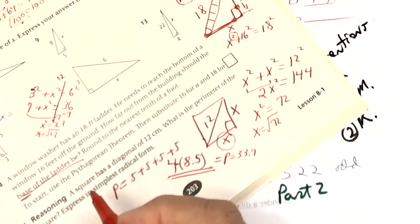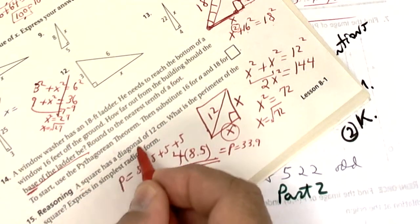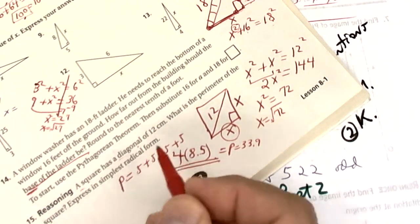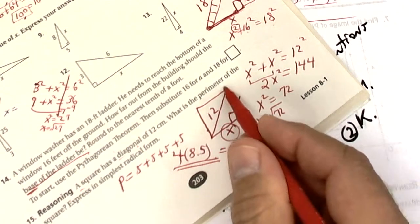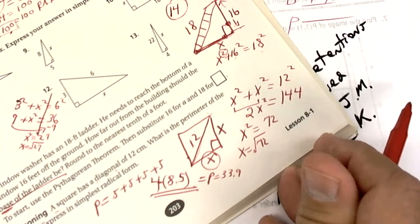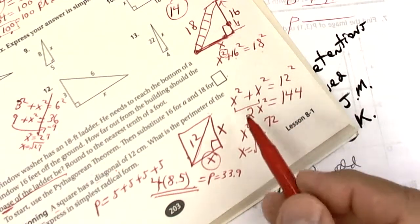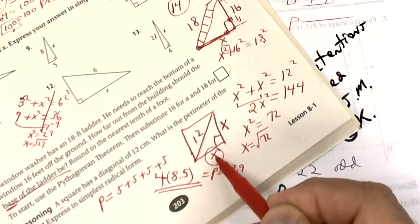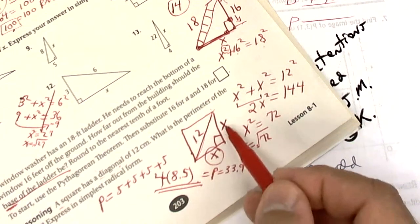On the next one, it says a square has a diagonal. So the first thing you do is draw a square. Here's your diagonal. And they tell you the diagonal. The nice thing about a square is the sides are the same. So put x here and put x there.